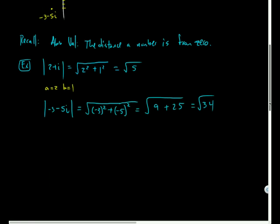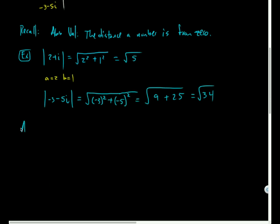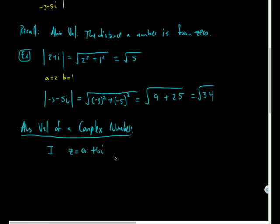So the absolute value of a complex number, I'll define it for us. If z is equal to a plus bi, then the absolute value of z is equal to the square root of a squared plus b squared. And that's the definition. Now, the absolute value of a complex number is also referred to as the modulus. So that's another name that might be given for it.